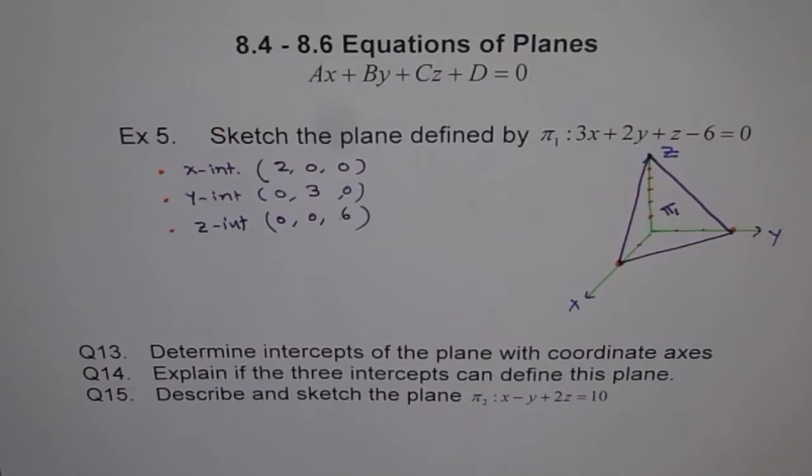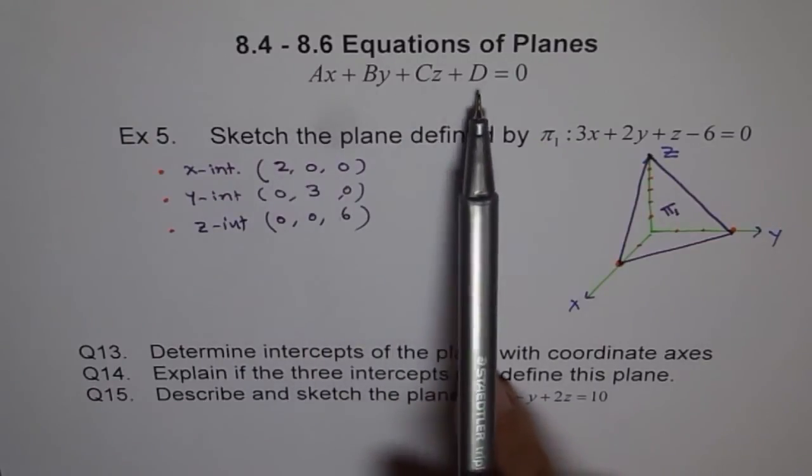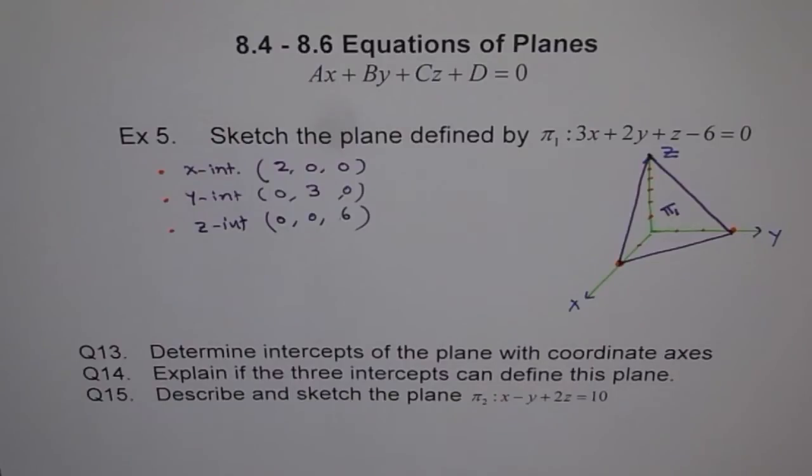So, that is how we are going to sketch this plane. So, you find intercepts are very, very important to sketch a plane like this. So, here in this equation, we have all the coefficients as non-zero and even the constant is non-zero. So, in that case, we get our x, y, and z intercepts and these points define the plane.